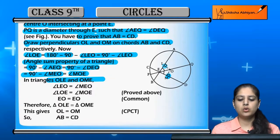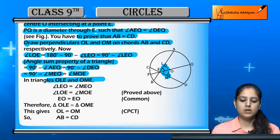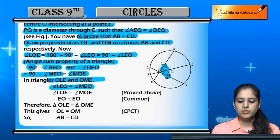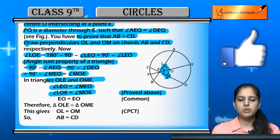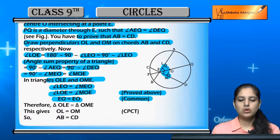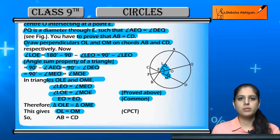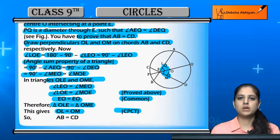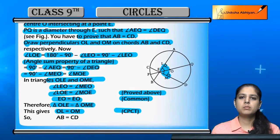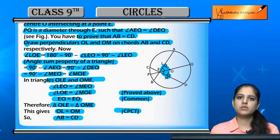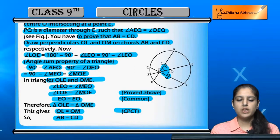Now in triangles OLE and OME: angle LOE equals angle MOE (proved), angle OLE equals angle OME (both 90 degrees), and OE is common. So the two triangles are congruent, giving OL equals OM by CPCT. Since OL and OM are equal distances from the center, by theorem number seven, AB equals CD.